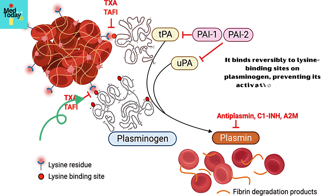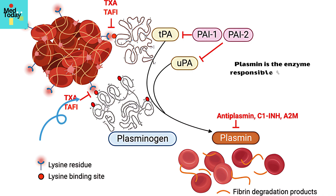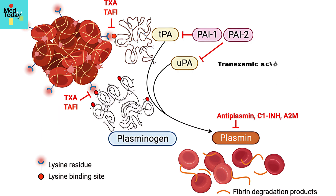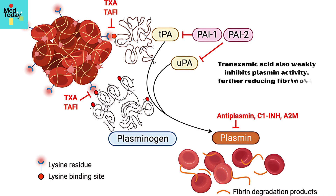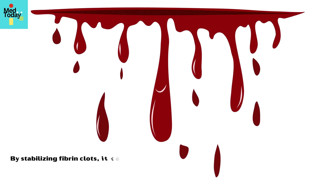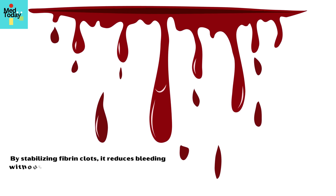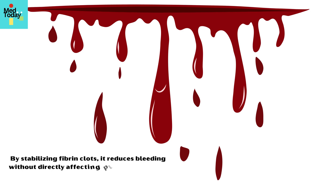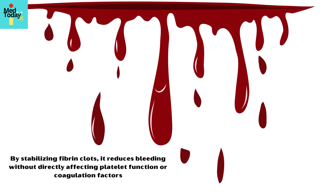Tranexamic acid inhibits fibrinolysis by competitive inhibition of plasminogen activation. It binds reversibly to lysine binding sites on plasminogen, preventing its activation to plasmin — the enzyme responsible for breaking down fibrin clots. It also weakly inhibits plasmin activity, further reducing fibrinolysis. By stabilizing fibrin clots, it reduces bleeding without directly affecting platelet function or coagulation factors.